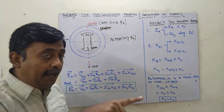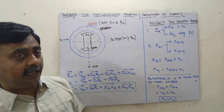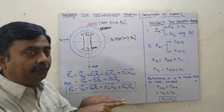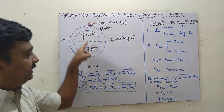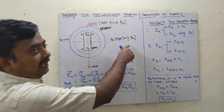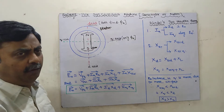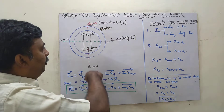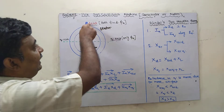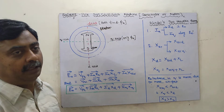The main flux is produced by the field coil, and armature flux is produced when the alternator is connected to a load — current flows through the armature and produces flux. In the direct axis, both armature flux and main flux are available. Whereas in the quadrature axis, main flux won't be available — only the armature flux will be available there.